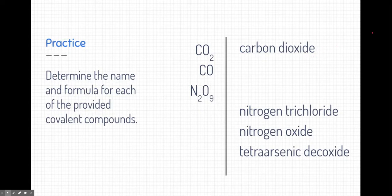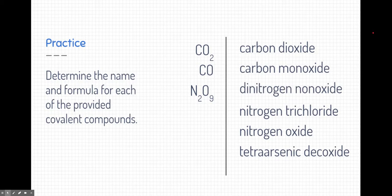How about the next one? It's very similar to the first, but this one is called carbon monoxide. So mono means one. There's one carbon. We don't use mono for the first carbon, but we do use mono for the second element oxygen. The third example has two nitrogens and nine oxygens. So N2O9. We would call that dinitrogen nanoxide. Nano is the prefix for nine according to our prefix list.